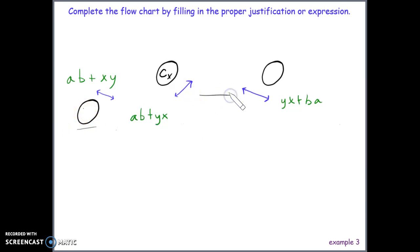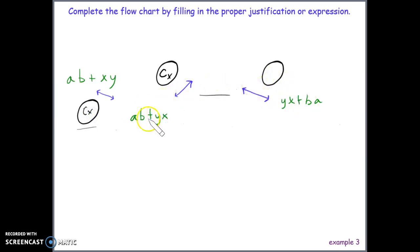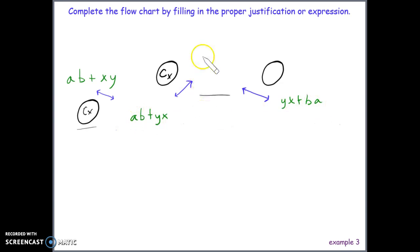For the last example, we fill in the justifications and the final expression. From here to here, x and y are being multiplied and their order changed — commutative property of multiplication. What changed next is also something being multiplied, and looking at the ending expression, the order of B and A has changed. So we get ba + yx, and from here to the final expression we are changing the order of addition — commutative property of addition.